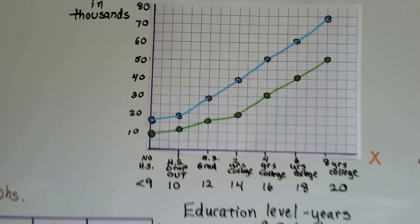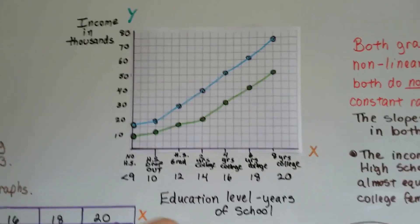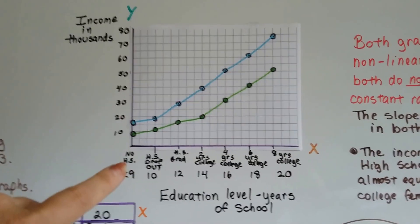The blue is male, and the green is female. Our X is how many years they were in school, and the Y is the income in thousands.